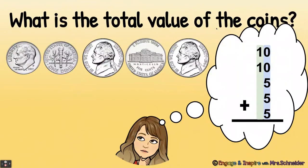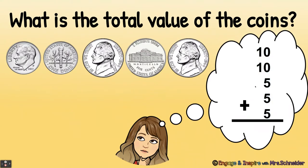What is the total value of the coins? Here we have a dime, dime, nickel, nickel, nickel, nickel — so ten plus ten plus five plus five plus five. We start on the right by adding our ones: five plus five plus five is fifteen. I write the five and carry the one. Then one plus one plus one plus one equals four — wait, so the total value is thirty-five cents.